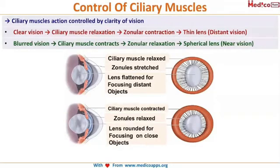To summarize: the ciliary muscle's action is controlled by the clarity of our vision. When I have clear vision, the ciliary muscle has nothing to do, so it relaxes, the zonules contract, and I can look at a distant object. Similarly, when the eye has blurred vision, the ciliary muscle contracts and the zonules relax, hence the lens becomes more rounded and I have clear near vision.